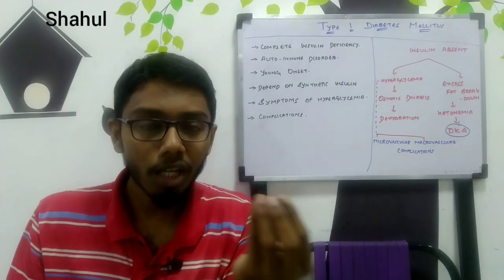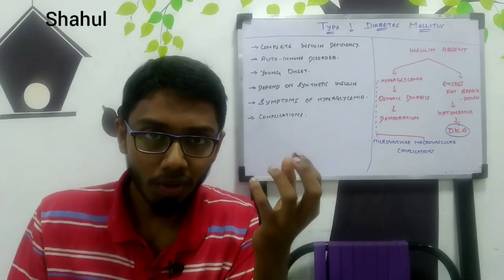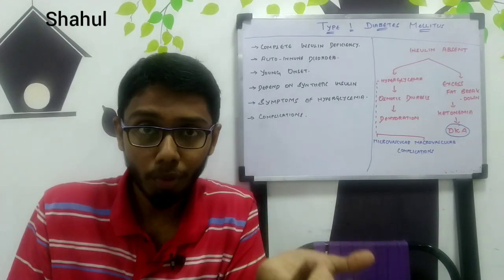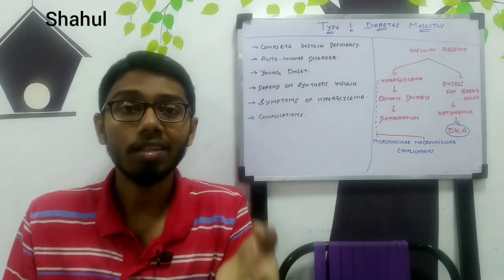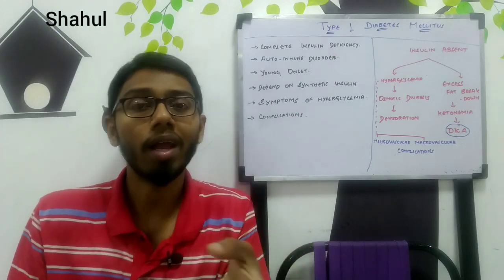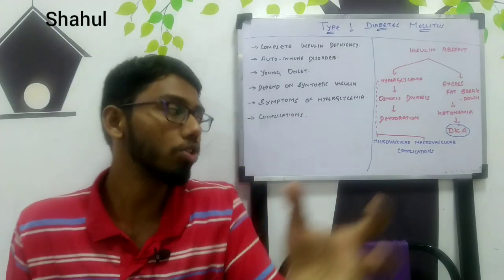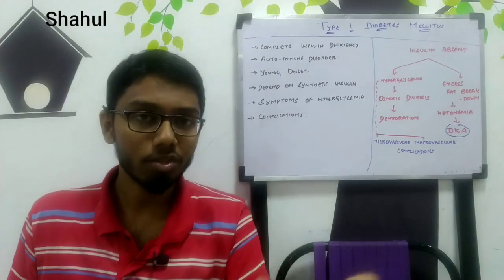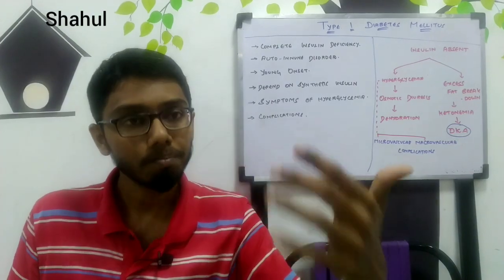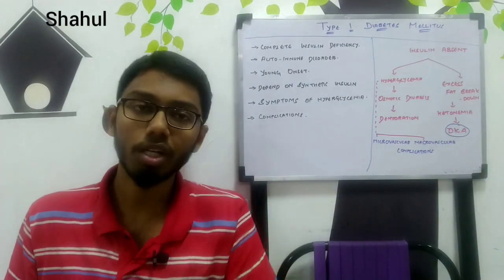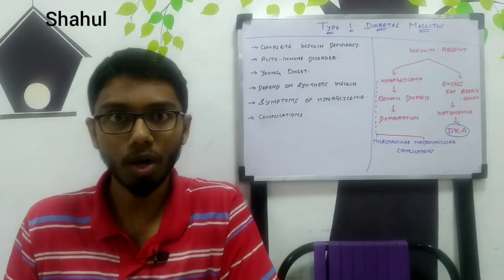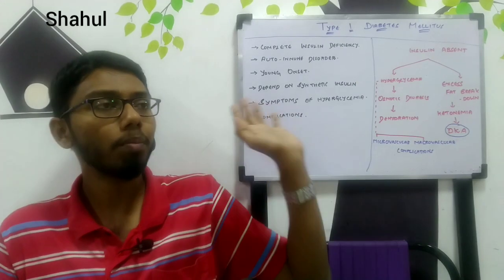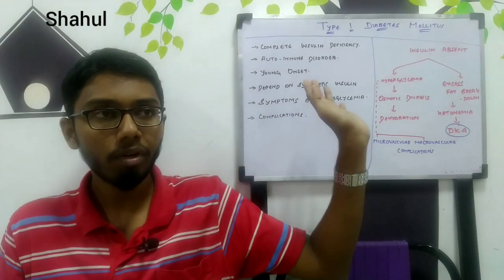When fatty acids are partially oxidized, a dangerous substance called ketone bodies is produced. When increased ketone levels in the blood exceed the body's ability to metabolize them, blood ketone levels rise. Since ketones are acidic, the acidity of the body increases, leading to an acute and dangerous situation called diabetic ketoacidosis, which will be explained in the next video.